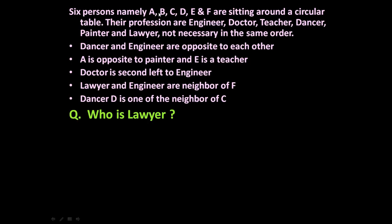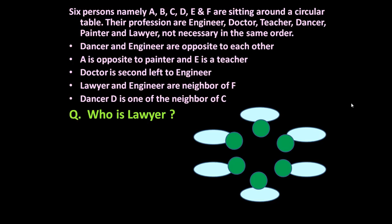To answer this question, first let us learn how to analyze the given information. There are six persons and it is a circular table and they have different professions. Let us make a tabular arrangement like this. The six persons A, B, C, D will occupy the green chairs, and the outer ellipse will indicate their professions. Now let us go statement wise.